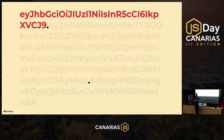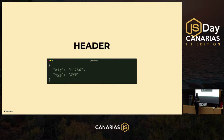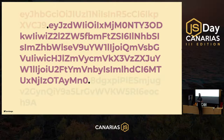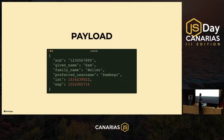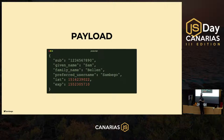The first part is the header. It contains information about the token itself — it's a base64-encoded JSON object. When decoded, you can see the algorithm used, for example HS256, and the type, which is 'JWT'. The payload is also base64-encoded JSON, made compact for easy transmission. When decoded it contains information like user ID, subject, given name, family name, username, issued-at time, and expiry date.